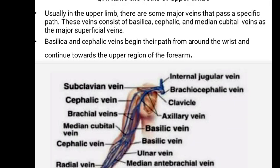Question number seven: name the veins of the upper limb. There are major veins in the upper limb that pass along specific paths. These veins consist of the basilic, cephalic, and median cubital veins as the major superficial veins. The basilic and cephalic veins begin their path from around the wrist and continue towards the upper region of the forearm.